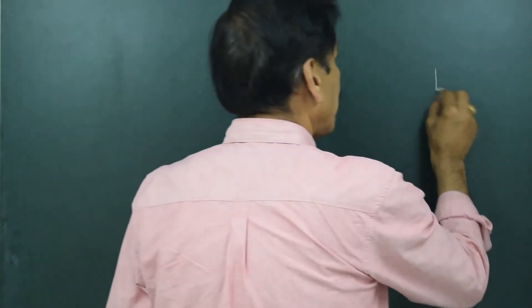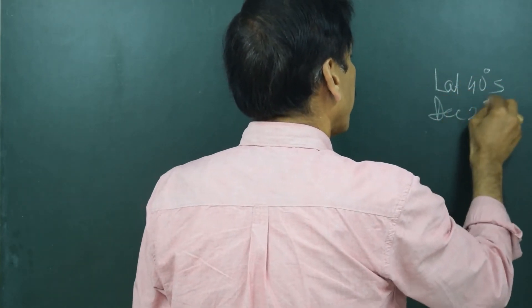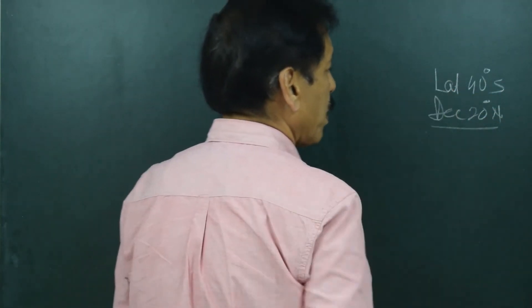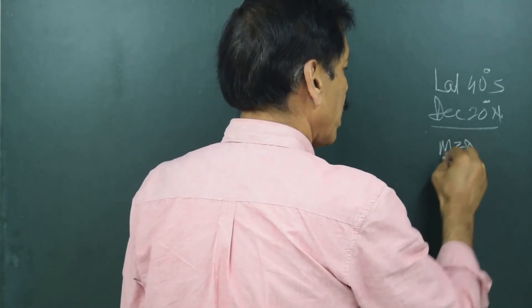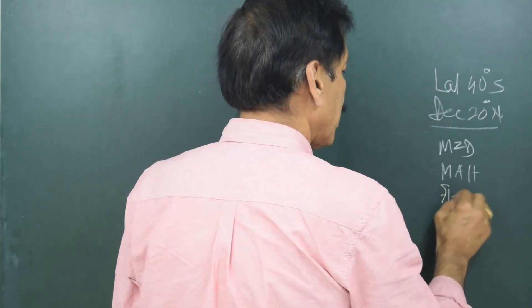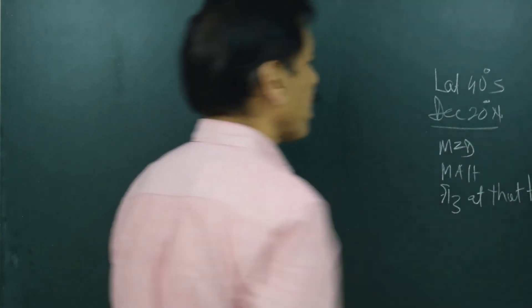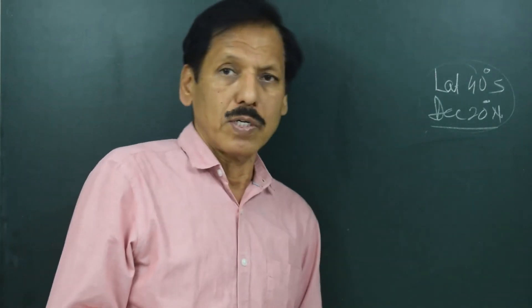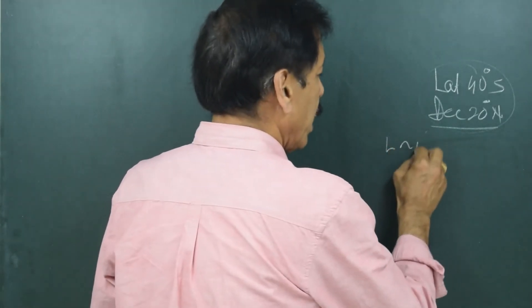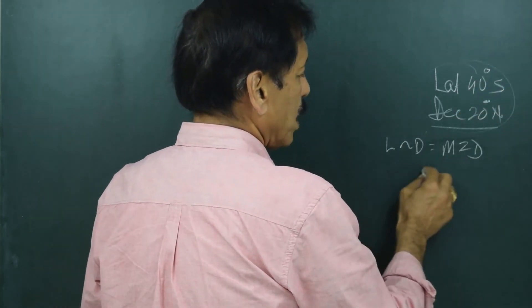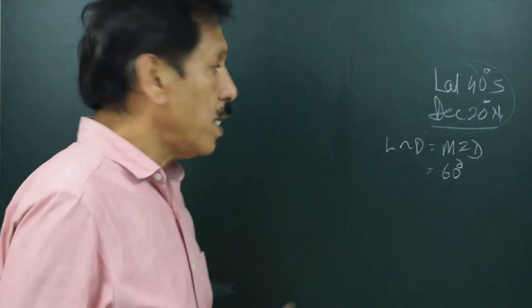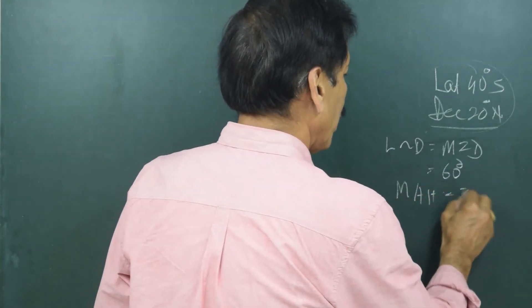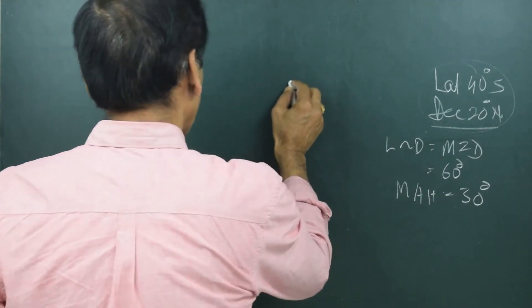Now let's take another situation where the observer's latitude is 40 degrees south and the declination is 20 degrees north — names are different. It is required to find the meridional zenith distance and the azimuth. Without drawing the diagram, using the rule L difference D = MZD: different names, so add — MZD = 40 + 20 = 60 degrees. Therefore meridian altitude = 90 minus 60 = 30 degrees. Now let us verify this with the observer's rational horizon diagram.